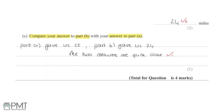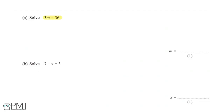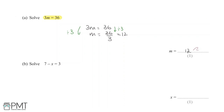We are asked to solve 3m = 36 for one mark. Dividing both sides by 3 gives m = 36 ÷ 3 = 12. You get one mark for the correct answer of m = 12.